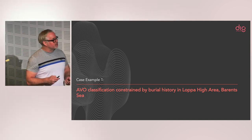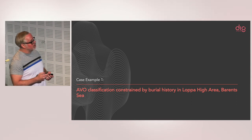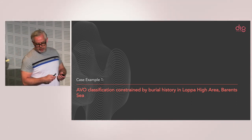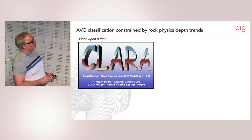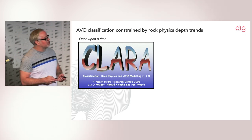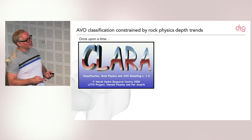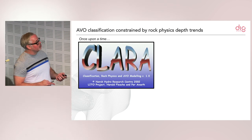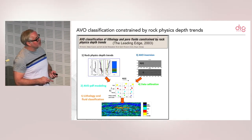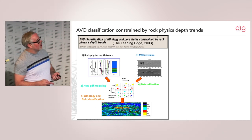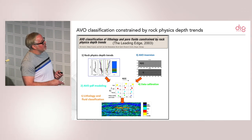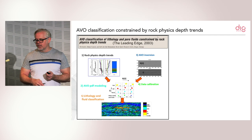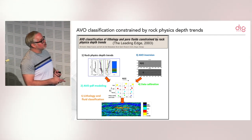I'll give two examples. The first is from the Loppe High in the Barents Sea. Back when I was working at Hydro with Harald Flesch and Art Jan van Weingarten, we had CLARA — Classification of Rock Physics and AVO Modeling — around 2002. We used this technology in offshore Angola looking for hydrocarbons. The idea was to couple rock physics depth trends — the compaction of rocks as a function of depth — then create training data of AVO distributions, intercept and gradient. After a calibration step, you train and predict the most likely facies, using a linear discriminant method like a Mahalanobis distance.